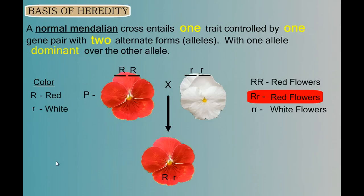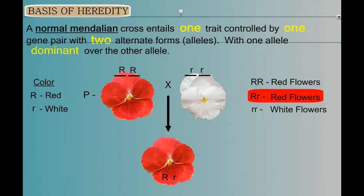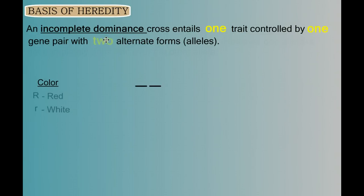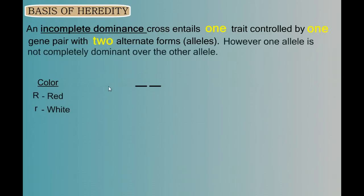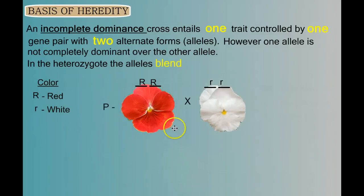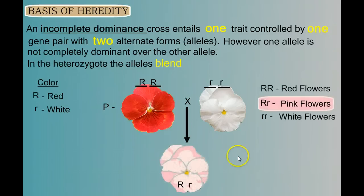In this video, we'll look at exceptions to this basic pattern. Our first variation is called incomplete dominance. We still have one trait controlled by one pair of genes with two alternate forms. However, one allele is not completely dominant over the other. In the heterozygote, the alleles will blend. So if we cross a homozygous red flower with a homozygous white flower, all the heterozygotes will be pink. There is no pink allele, but there's a pink phenotype — there's a blending in the heterozygote.